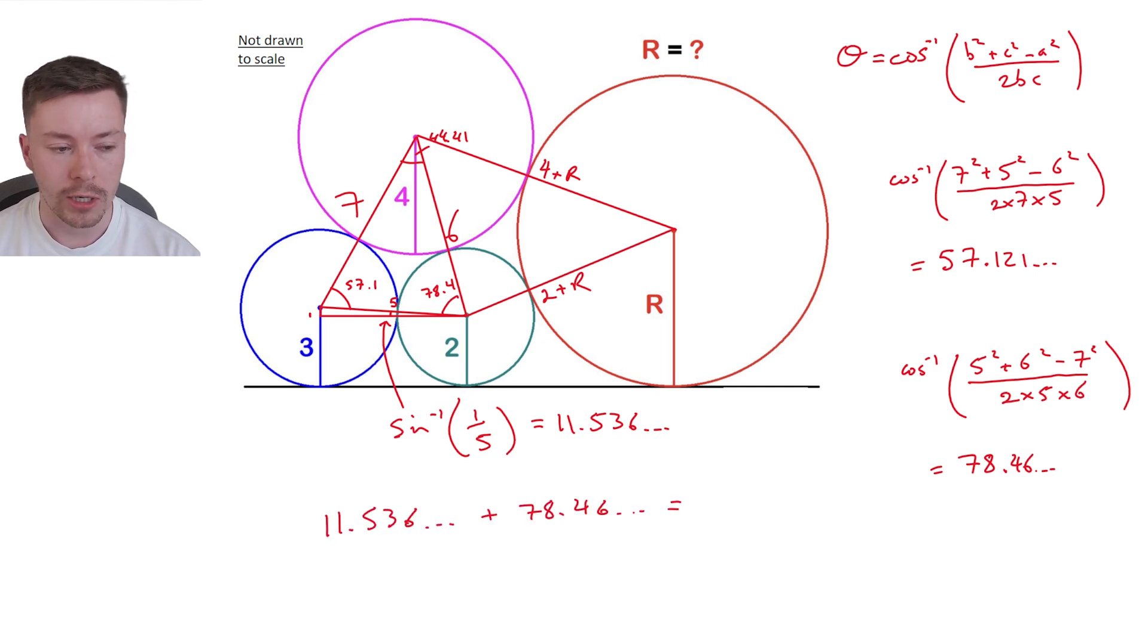Interestingly, the sum of those two angles gave me 90 degrees. That means that the 6 from the centre of my radius 2 circle to the centre of my radius 4 circle has to be 90 degrees with the horizontal, which means it's completely vertical. This pink circle sits exactly on top of the green circle.